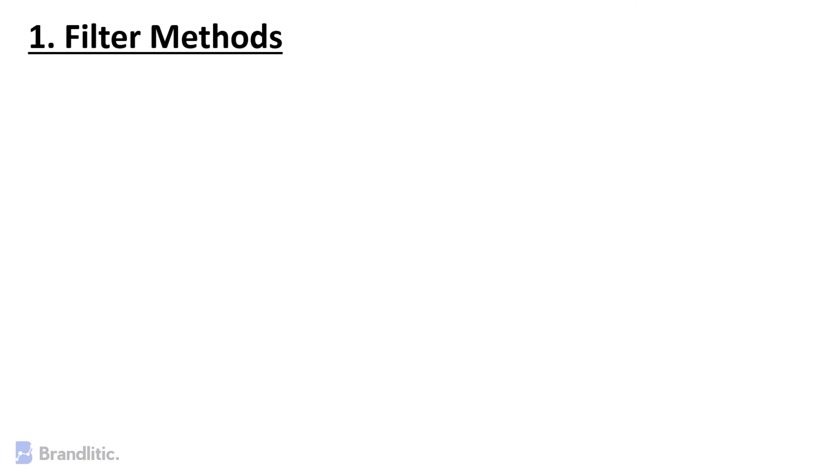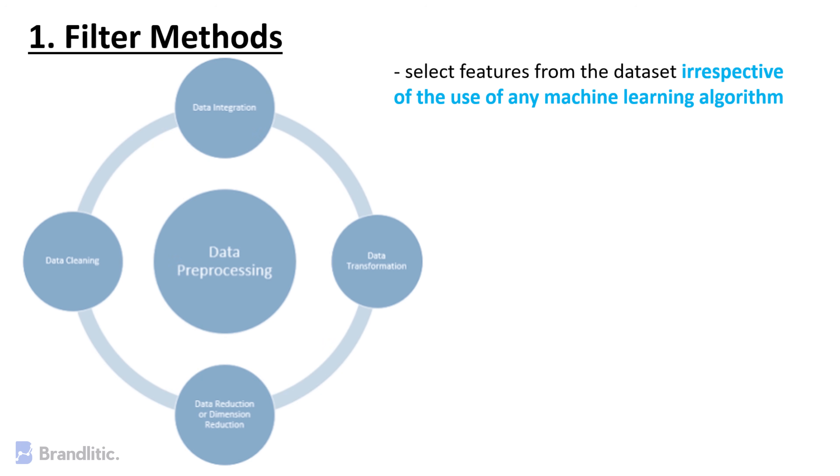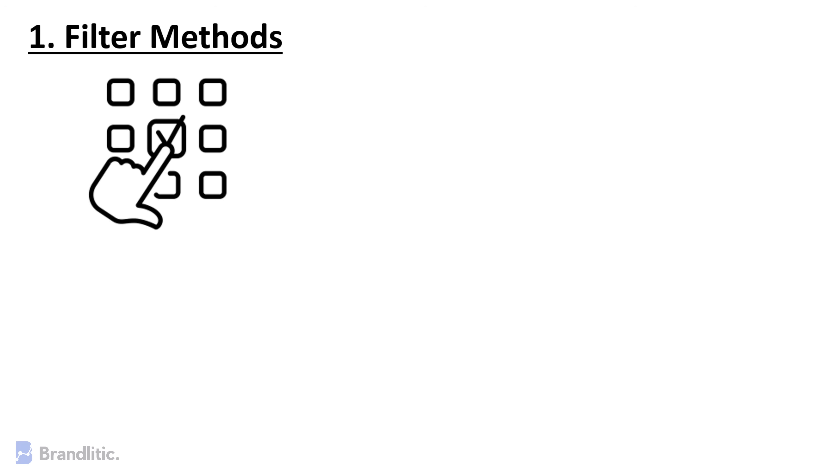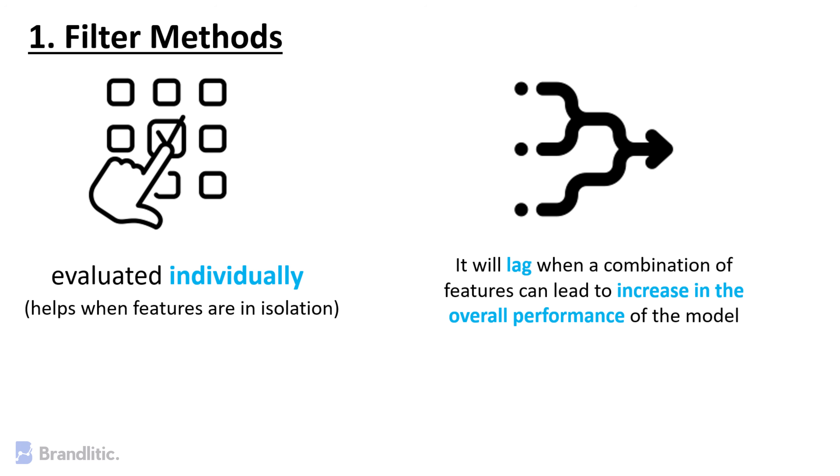Filter Methods. These methods are generally used while doing the preprocessing step. These methods select features from the dataset irrespective of the use of any machine learning algorithm. In terms of computation, they are very fast and inexpensive, and are very good for removing duplicated, correlated, redundant features, but these methods do not remove multi-collinearity. Selection of feature is evaluated individually, which can sometimes help when features are in isolation, but will lag whenever a combination of features will lead to an increase in overall performance of the model.